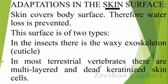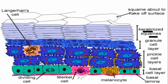In most terrestrial vertebrates, there are multilayered dead keratinized skin cells. The skin has many layers of dead keratinized cells. Here we can see keratinized squamous cells — squamous cells are flat dead cells. These many layers of keratinized squamous cells stop the loss of water, preventing evaporation to the external environment, and protect the internal body parts from dry conditions.